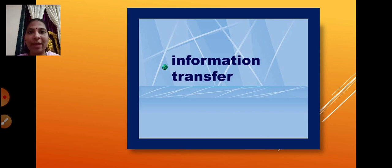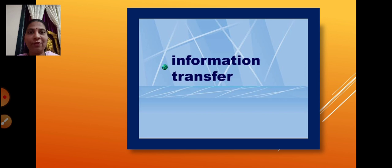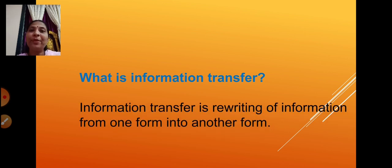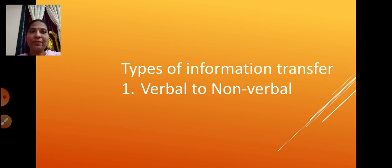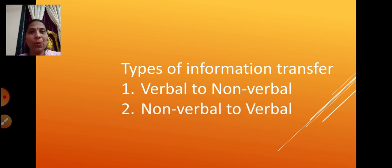So suppose if something is given in a tabular form and you convert it into a paragraph form, that is called information transfer. Or something given in a paragraph may be asked to be converted into a non-verbal form — a web diagram, flowchart, pie chart, or bar graph. Information transfer is rewriting of information from one form into another form. The two types are verbal to non-verbal and non-verbal to verbal.